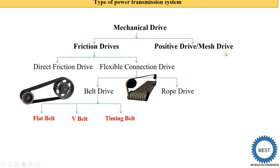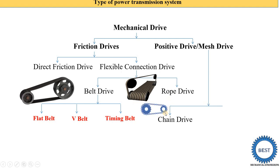The second category is positive drive or mass drive. It is called positive drive because in this drive no slip occurs. It is also called mass drive. In a positive drive we have two options: one is called chain drive. In a chain drive, sprockets and the chain are used, and the sprockets and chain are in mesh with each other — that's why it is also called mass drive. The chain transmits power from shaft one to shaft two.